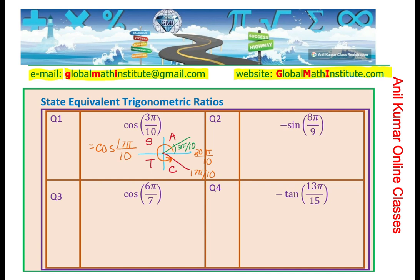So this has to be 17π/10. So we could write this as equal to cos(17π/10). Does it make sense to you? Correct? 3 less than 20. So that is how we get our equivalent trigonometric ratio.